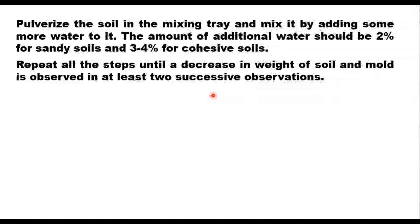After the first trial, pulverize the soil in the mixing tray and mix it by adding more water. The amount of water to add is 2% for sandy soils and 3 to 4% for cohesive soils. Repeat all the steps until a decrease in weight of the soil and mold is observed in at least two successive observations.